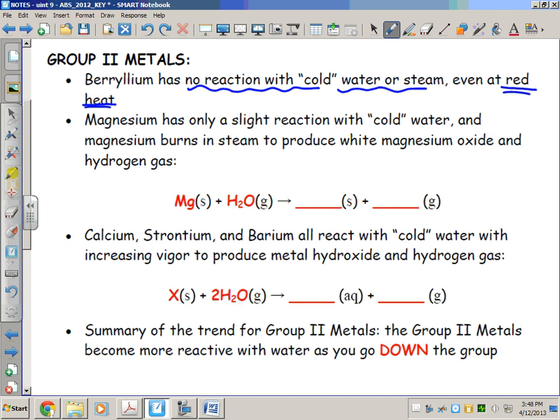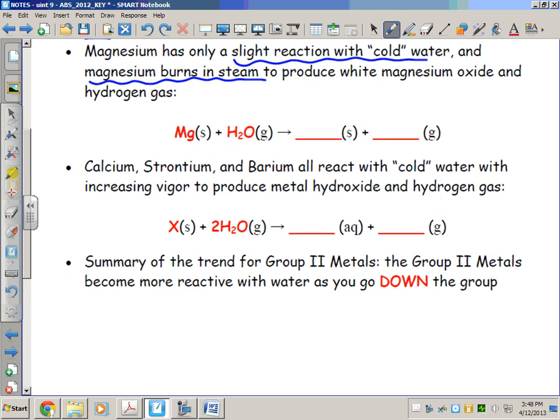Magnesium, one element below beryllium, has only a slight reaction with cold water. But if you expose magnesium to steam, it will burn and ignite to produce white magnesium oxide, the same as if you exposed it to an open flame. The formula: magnesium solid plus water vapor gives magnesium oxide (this is +2, -2) and H2 gas. In this case, this doesn't really have acid-base implications; magnesium oxide is neither an acid nor base.